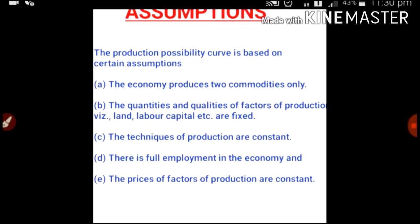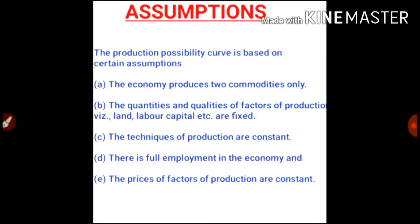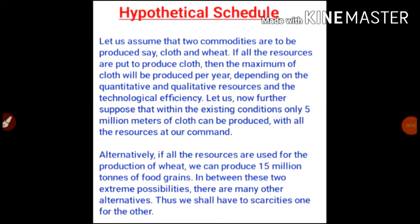The prices of factors of production are constant. Let us assume that two commodities are to be produced — say, cloth and wheat. If all resources are put to produce cloth, then the maximum amount of cloth will be produced per year, depending on the quantitative and qualitative resources and the technological efficiency. Within existing conditions, only 5 million meters of cloth can be produced with all the resources at our command.